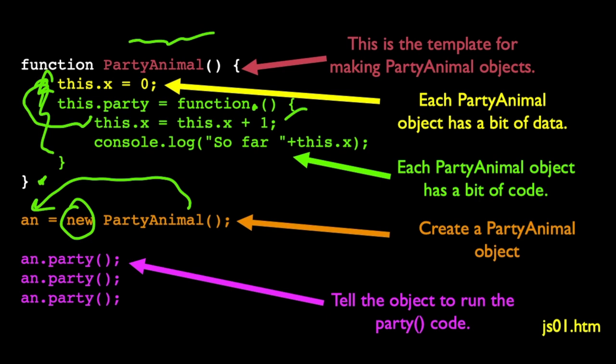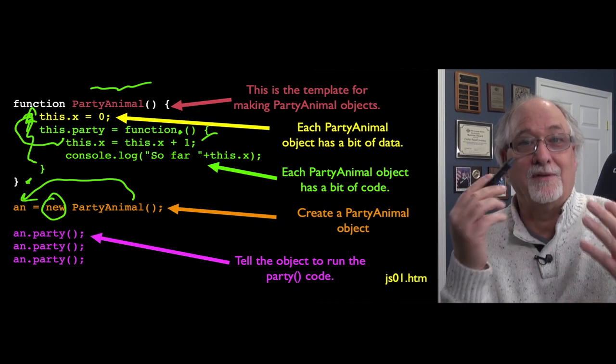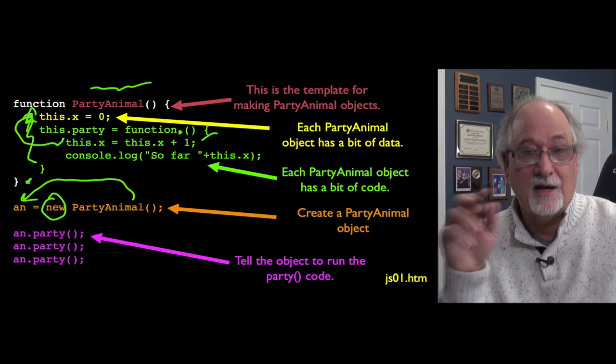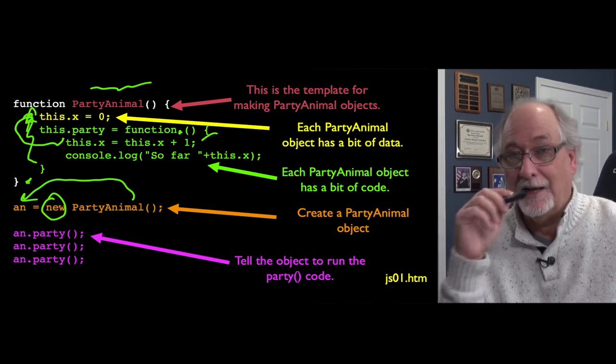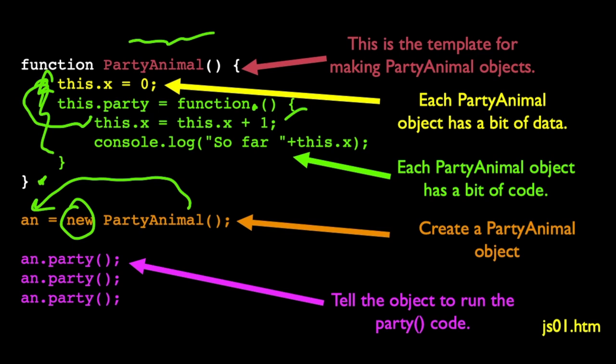Then an is where I store that object. So an is my first instance of a PartyAnimal object. But now I can talk to an.party and call it again. That's why I call an.party three times. So I call the method party. That is the basic mechanism.